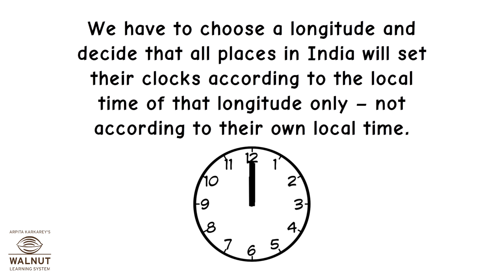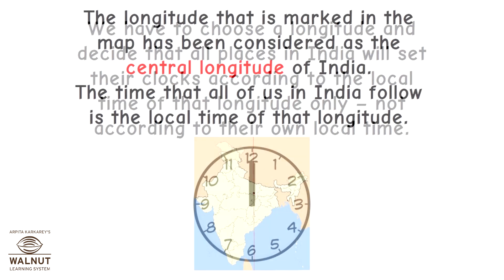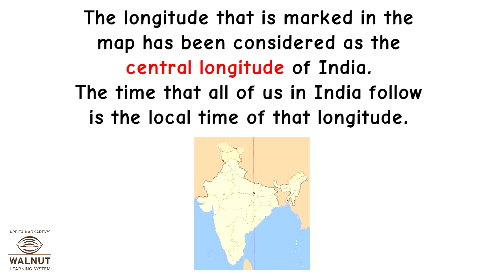We have to choose a longitude and decide that all places in India will set their clocks according to the local time of that longitude only, not according to their own local time. The longitude marked in the map has been considered as the central longitude of India, and the time that all of us in India follow is the local time of that longitude.